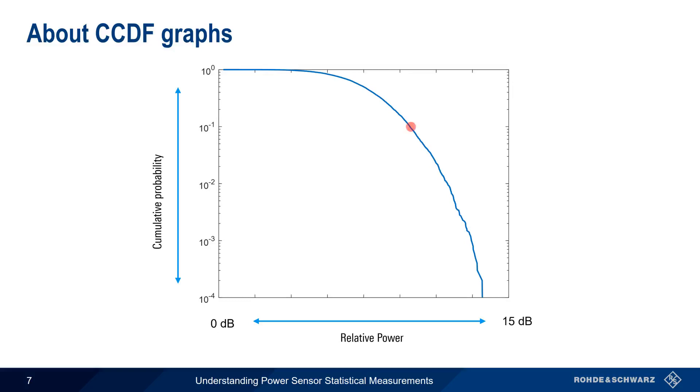Remember that a point on the CCDF graph shows the probability, or percent of time, that a signal is at or above a certain level. In this relative graph, we see that 10% of the time, the power is 11 dB or more above the average level.